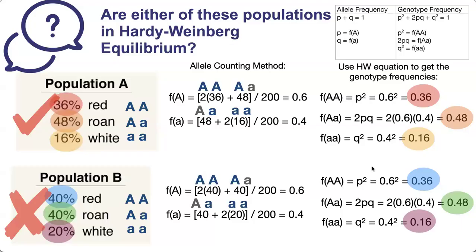To summarize: you use the allele counting method to identify the frequency of the alleles, and then you see if you can use the Hardy-Weinberg equation to go back and generate the genotype frequencies. If you can do that, then the population is in Hardy-Weinberg equilibrium. And if you can't, then it isn't.